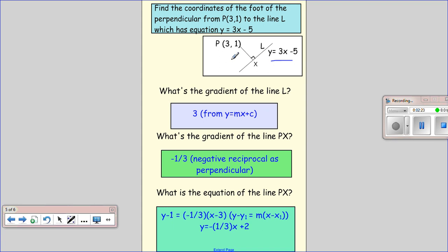We can see that the gradient is 3. And then for our line PX, the gradient will be -1/3 because it will just be the negative reciprocal of 3. That means change the sign so positive becomes negative, take the reciprocal, so it's 1 over 3.